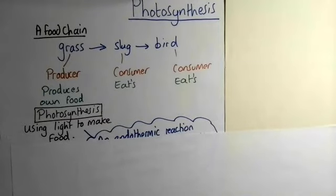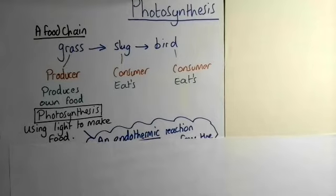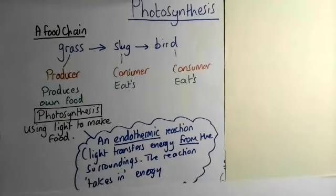So a very simple definition is that photosynthesis is a chemical reaction that uses light to make food. Now we can actually say a little bit more.